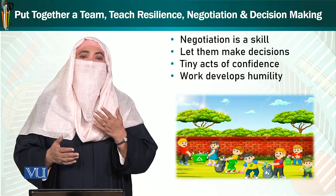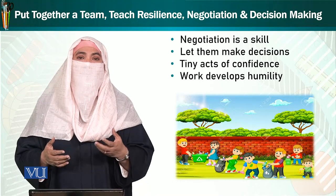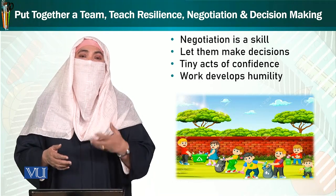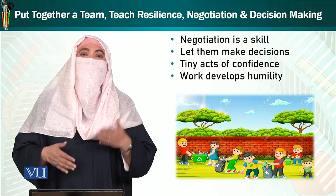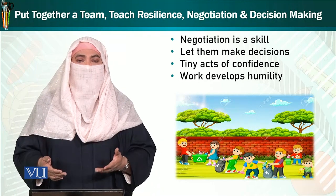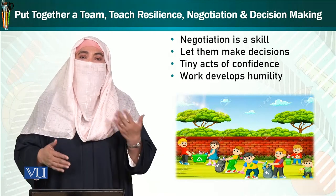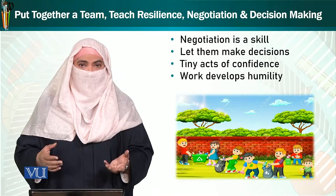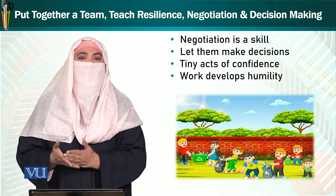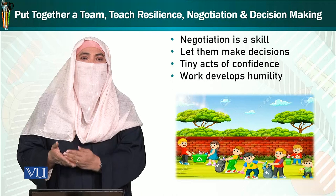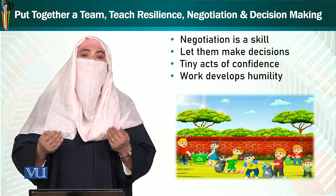تو یہ ہمارے ساتھ Erik Erikson کی جو theory ہے، جس میں وہ کہتے ہیں کہ دو سے تین سال کا بچہ independent ہو جاتا ہے، اپنے کاموں کو خود سے کرنا پسند کرتا ہے، اپنے decisions لینا پسند کرتا ہے۔ اور پھر ظاہر ہے جب decision لے گا تو اس کی ذمہ داری بھی لے گا۔ خدانخواستہ اگر آپ اسے ہر چیز پر روکتے ہیں — آپ کھانا خود نہیں کھائیں گے، آپ یہ نہیں کر سکتے، آپ وہ بھی نہیں کر سکتے — تو اس کے اندر shame develop ہو جائے گی، اور پھر وہ shame کبھی نہیں جائے گی۔